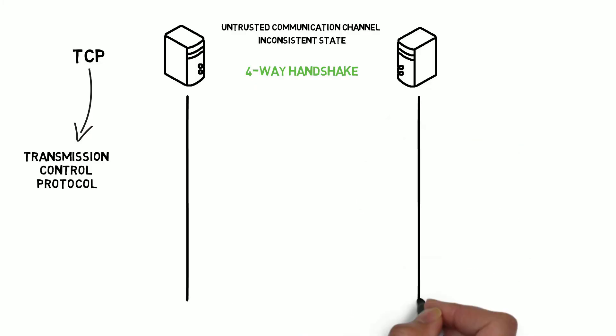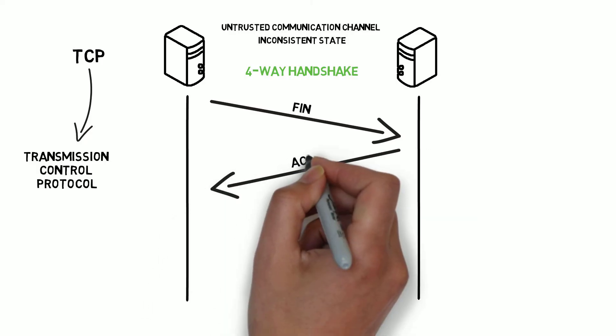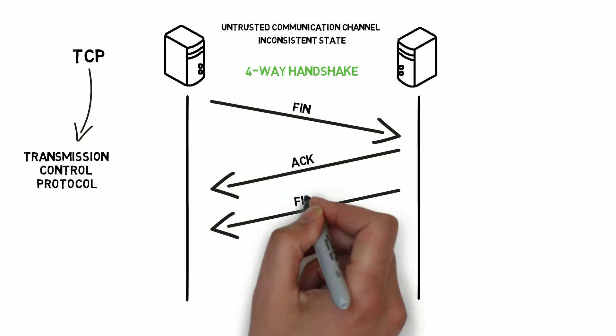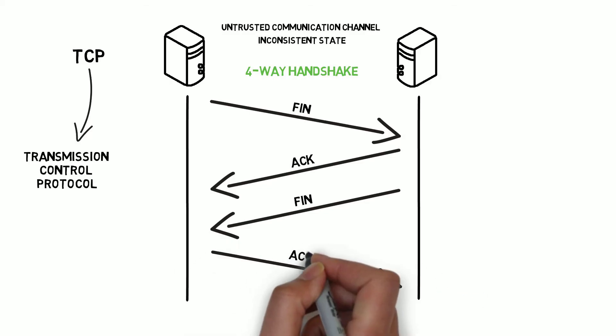In this mechanism, a system that wants to terminate a connection sends a FIN message. The system on the other side of the communication channel replies with an ACK and sends its own FIN message, which is followed by another ACK from the system which initialized termination. When all of those messages are received correctly, both sides know that the connection is terminated. So far it looks okay, but the problem here is again the shared knowledge between the two systems.